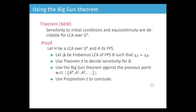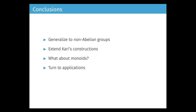We can even lift this property to general additive automata over finite abelian groups — not just groups like z over mz, but general abelian groups — by using a lifting trick. We prove that there is an embedding from an additive CA to a linear CA, and so we also prove decidability for the general case.